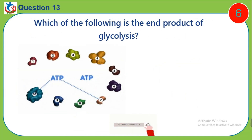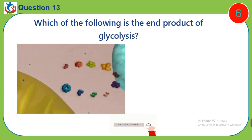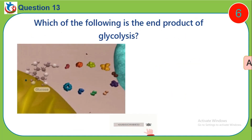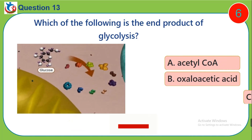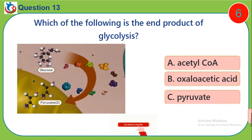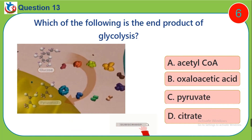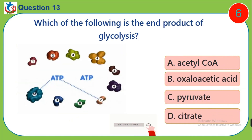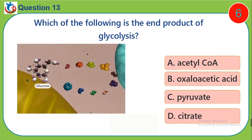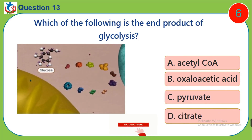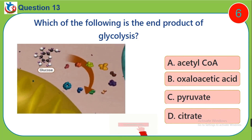Question 13. Which of the following is the end product of glycolysis? A, acetyl-CoA. B, oxaloacetic acid. C, pyruvate. D, citrate.